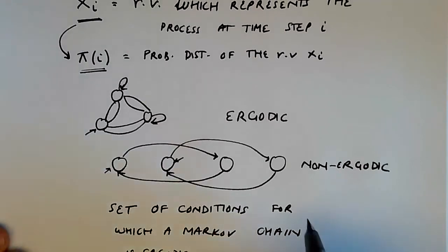If you can get the set of conditions, then what we can do is we can just test the conditions on the chain, and if they hold,